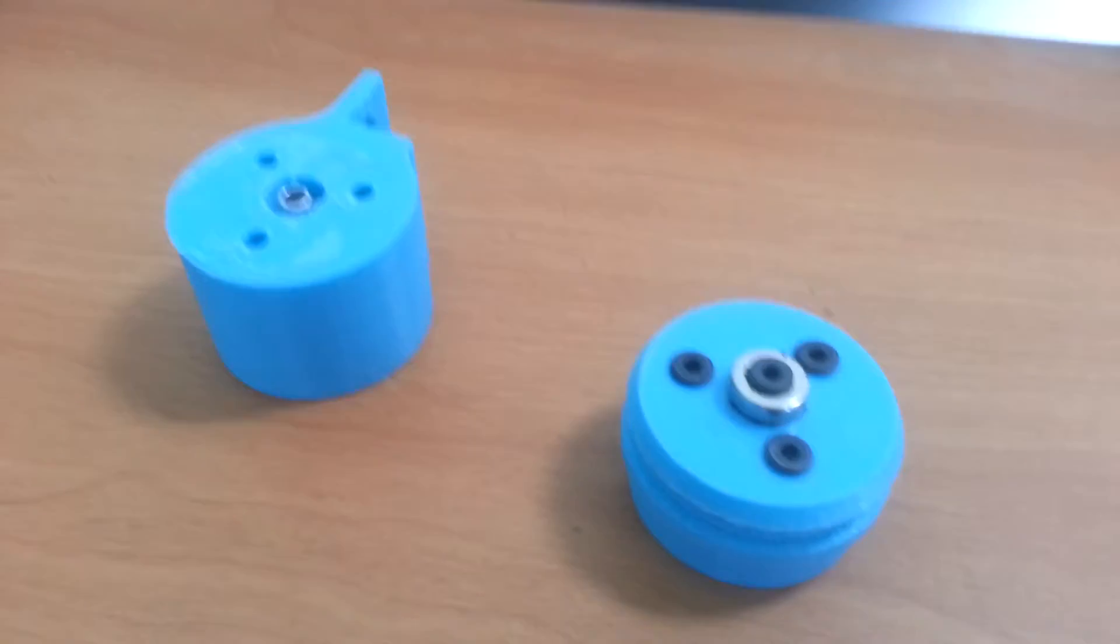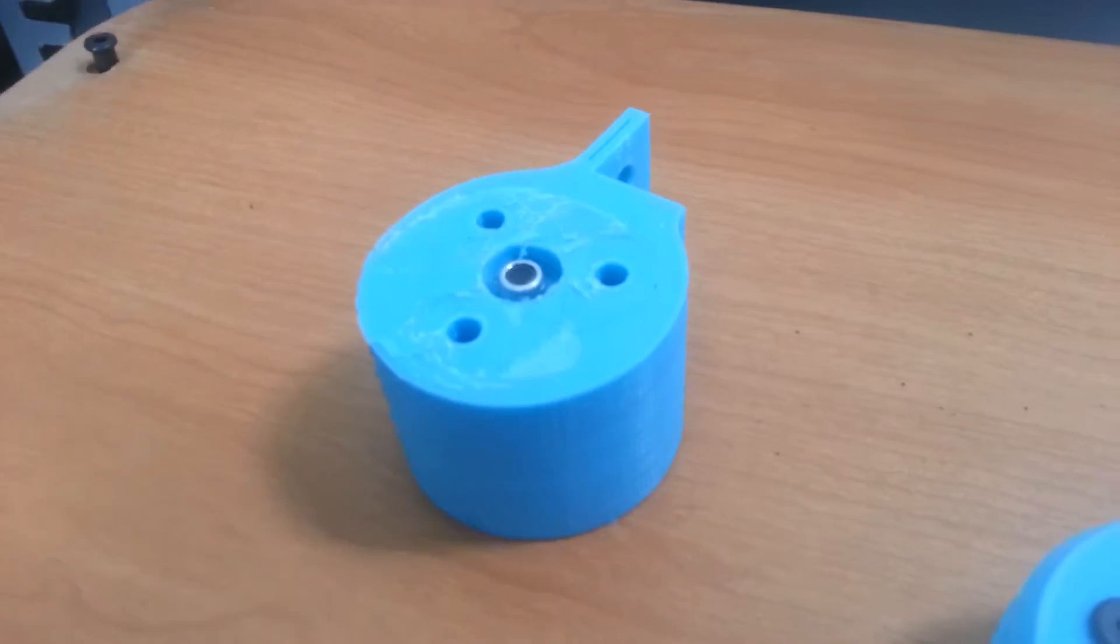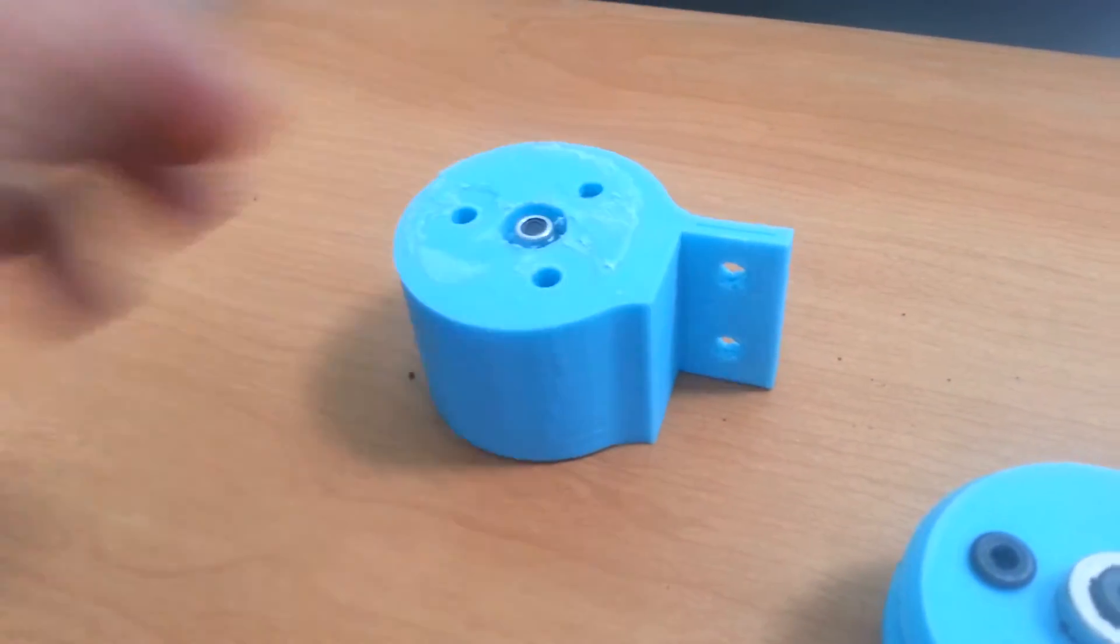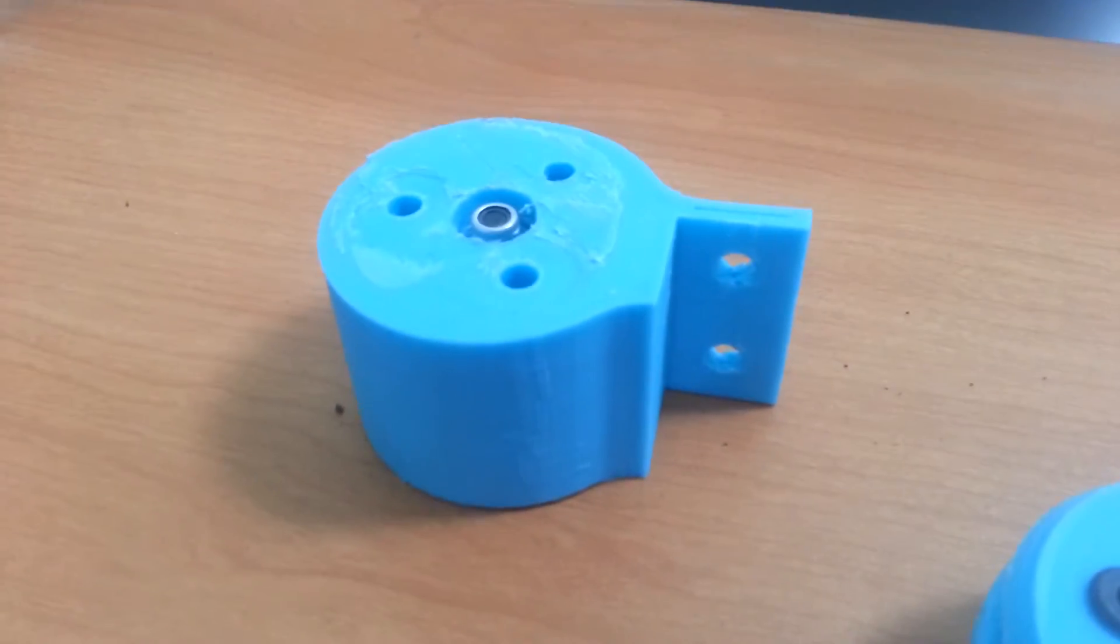So this was version 4 universal tool mount. Over here we had the tool mount itself which mounted with these two holes here onto the z-axis aluminum extrusion.